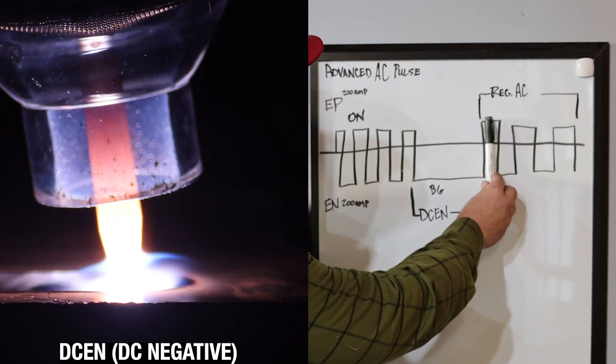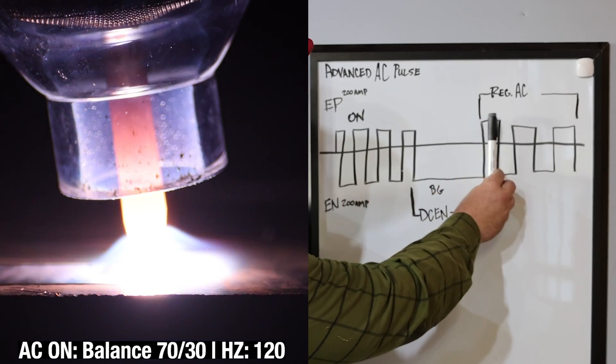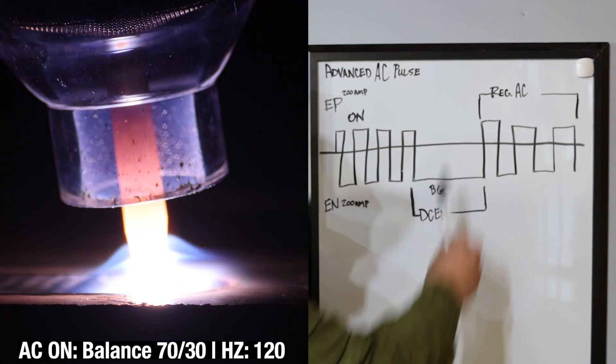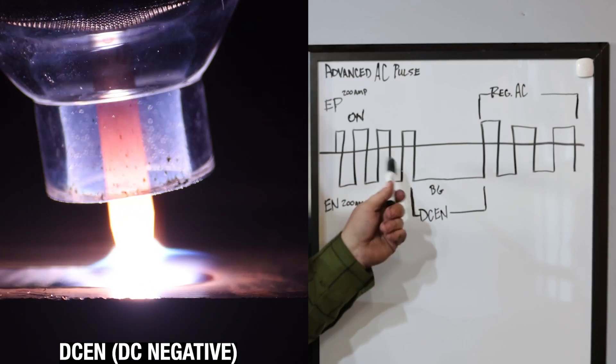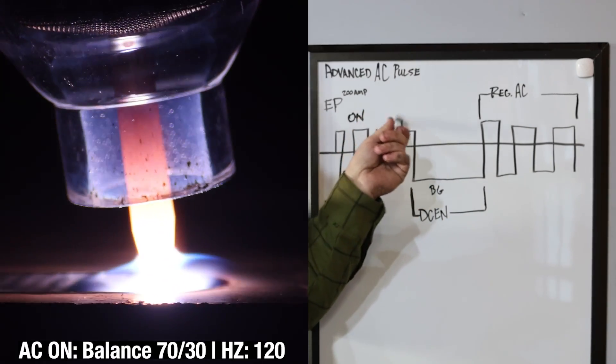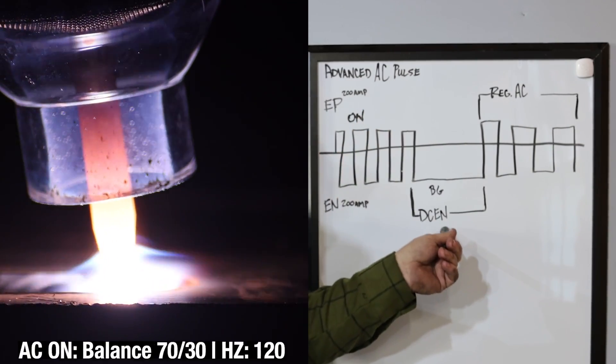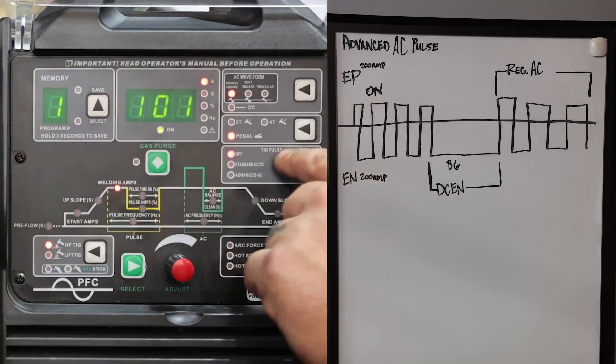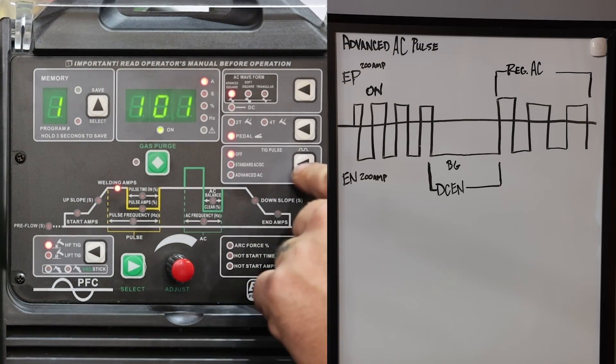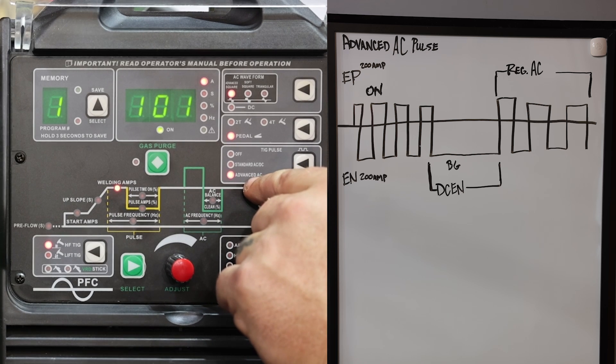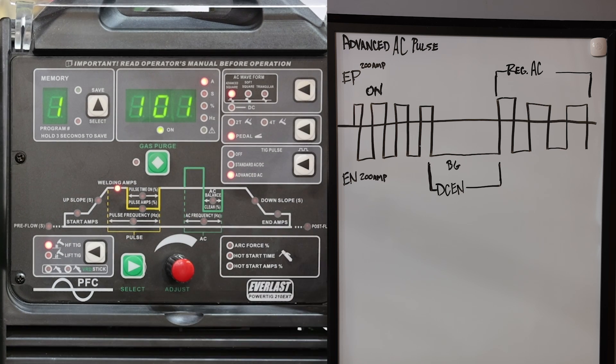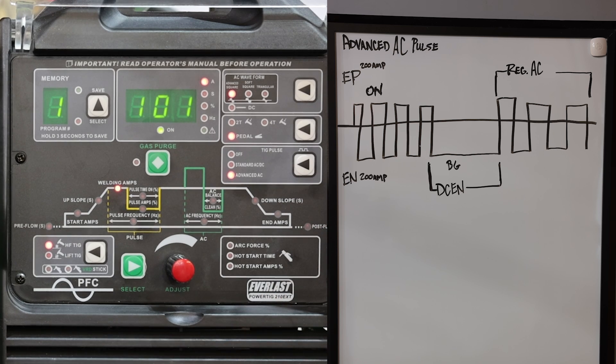So this would be on the pulse. This is one hertz or one cycle. So when you're setting the pulse hertz, you're setting how many times per second you switch between regular AC and DC electrode negative. So we're going to go to our TIG pulse settings area, go right past standard to advanced AC pulse. So now we're set up to where we can adjust our on time background and our pulse frequency for advanced AC pulse only.